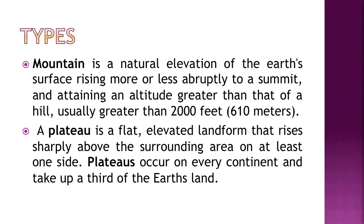There are various types of landforms. A mountain is a natural elevation of the earth's surface rising more or less abruptly to a summit, attaining an altitude greater than that of a hill — usually greater than two thousand feet. A plateau is a flat elevated landform that rises sharply above the surrounding area on at least one side. Plateaus occur on every continent and take up a third of earth's land.